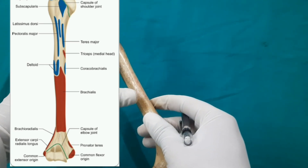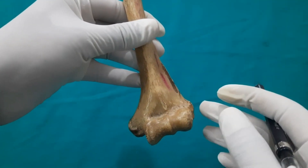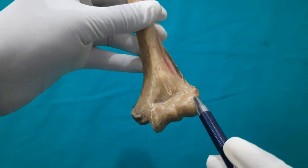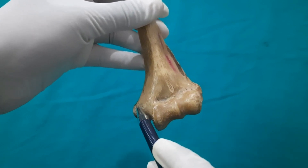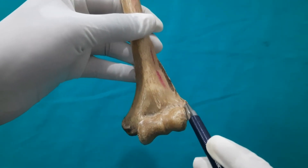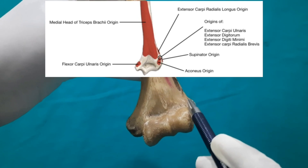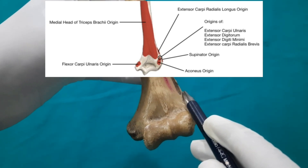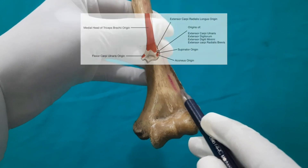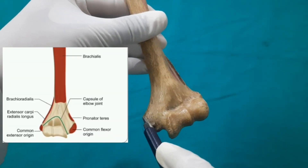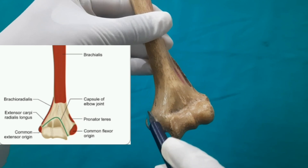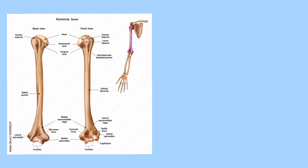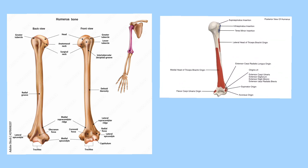At the distal end of the humerus, the trochlea is medial, the capitulum is the rounded globular structure laterally, and the medial epicondyle is more prominent than the lateral epicondyle. The lateral epicondyle gives the common origin for the superficial extensor muscles and the supinator, while the lateral supracondylar ridge gives origin to extensor carpi radialis longus. The medial epicondyle gives origin to the common flexor muscles anteriorly, and the medial supracondylar ridge gives origin to pronator teres. This concludes the humerus with its proximal end, shaft, and distal end muscle attachments.